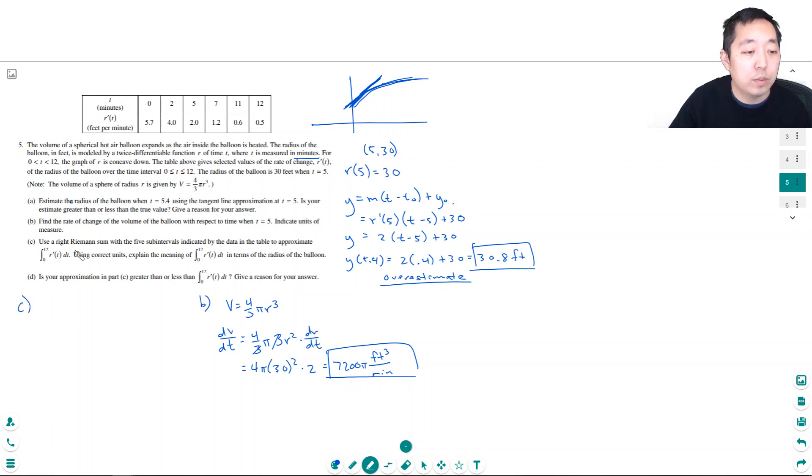Part c: Use a right Riemann sum with 5 subintervals to approximate the integral. So I have 0 to 2, 2 to 5, 5 to 7, so I have 5 intervals. The right Riemann sum means that for this rectangle from 0 to 2, I use the right value on the table. So the area from 0 to 12 of r prime of t dt is approximately equal to, well, the height of the rectangle would be 4.0, and the width would be 2 minus 0.